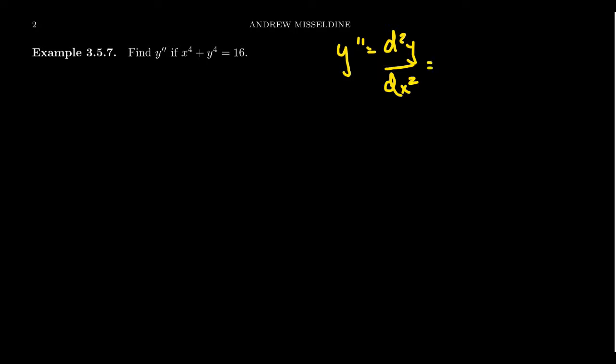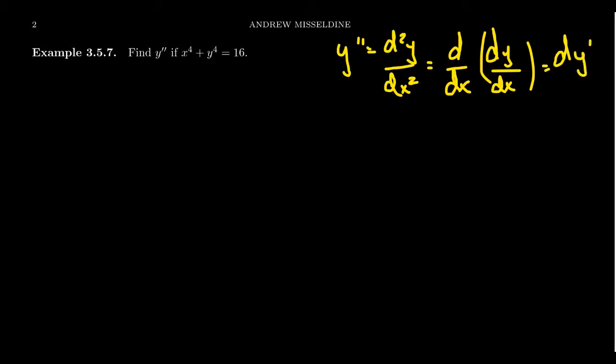What's with the squares going on here? This second derivative means that we take the first derivative, dy over dx, and we take its derivative with respect to x. This is why the d gets squared — the d shows up twice, and the dx gets squared because it shows up twice as well. The second derivative is the derivative of the derivative. We take the derivative twice.